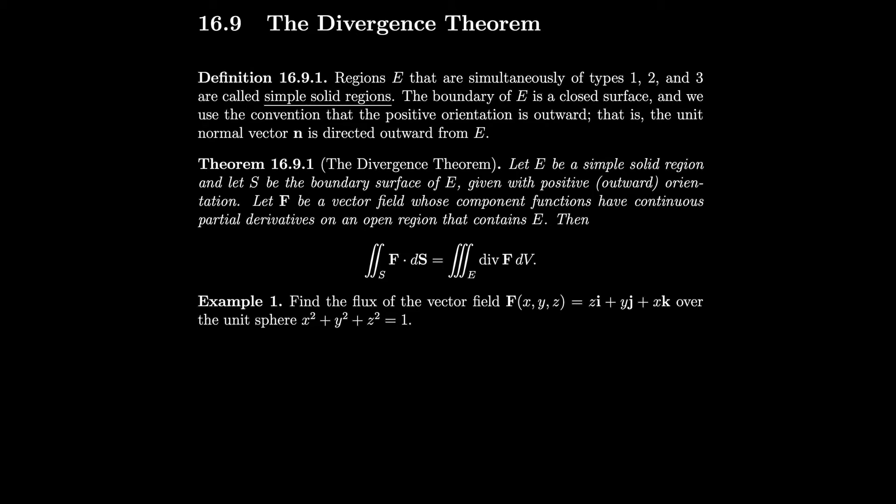Section 16.9, the divergence theorem. Regions E that are simultaneously of types 1, 2, and 3 are called simple solid regions. The boundary of E is a closed surface and we use the convention that the positive orientation is outward — that is, the unit normal vector n is directed outward from E.